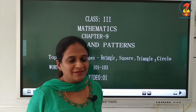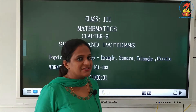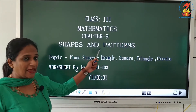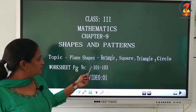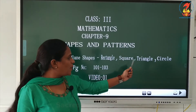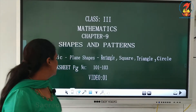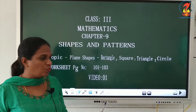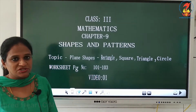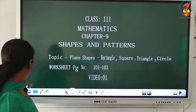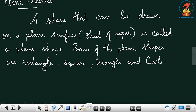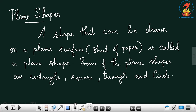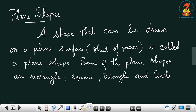Good morning! We're going to start with the new chapter 9, Shapes and Patterns. The topic is plane shapes: rectangle, square, triangle, and circle. Worksheet page number one will be covered. Now let's move on to the fifth topic — plane shapes.